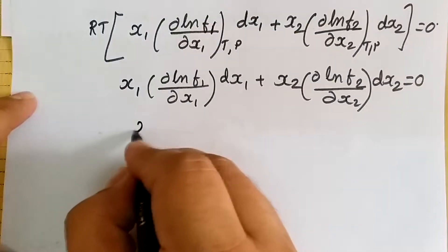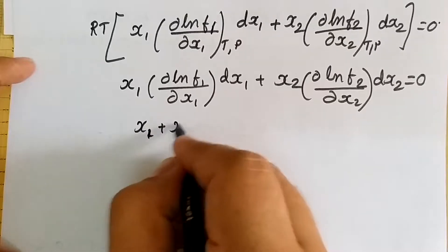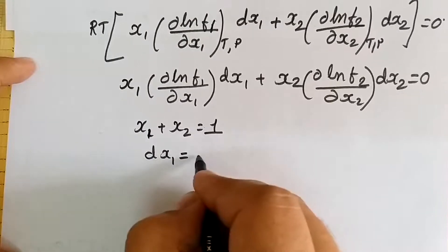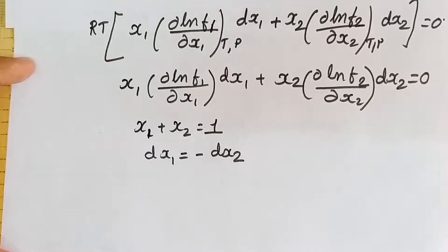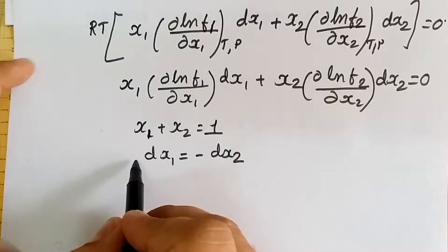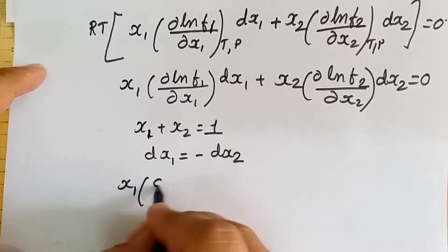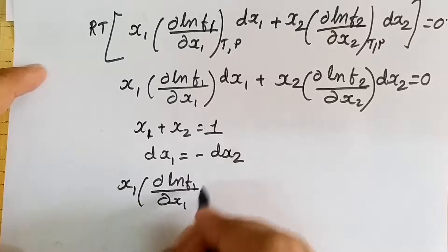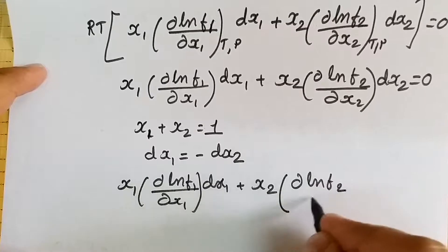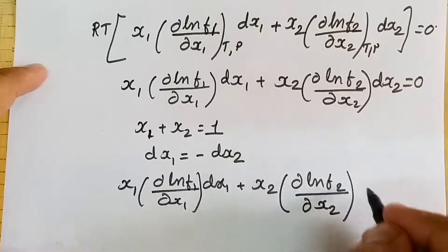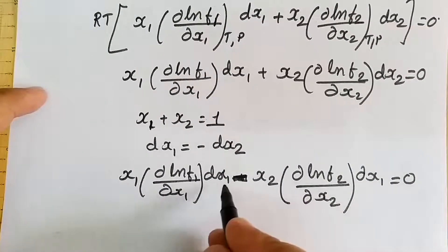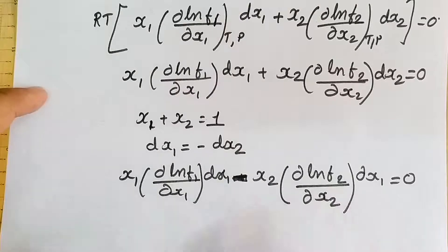We know that x1 plus x2 equals 1, so differentiating gives dx1 equals minus dx2. We use this fact in the above equation, substituting minus dx1 in place of dx2. Our equation becomes: x1(∂ ln f1/∂x1)dx1 plus x2(∂ ln f2/∂x2)(minus dx1) equals 0. Taking dx1 common and removing it, we get: x1(d ln f1/dx1) minus x2(d ln f2/dx2) equals 0.